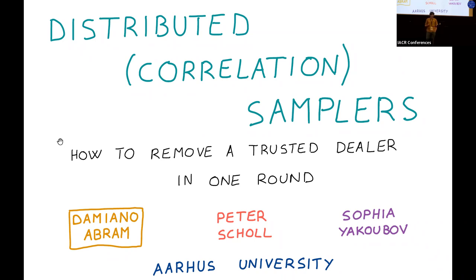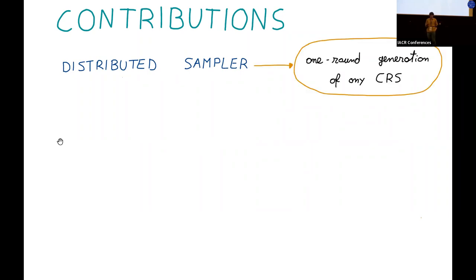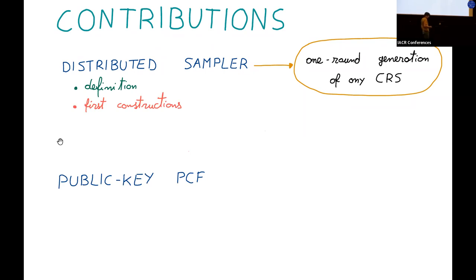This is the result of a collaboration between myself, Peter Scholl, and Sofia Yakubov. The main contributions of our work are two. The first one is the introduction of a new cryptographic primitive called Distributed Samplers. These are basically a one-round protocol that allow n parties to generate any CRS in a secure way using only one round of interaction. For instance, we can use them to generate an RSA modulus without leaking the factorization and using only one round of communication.